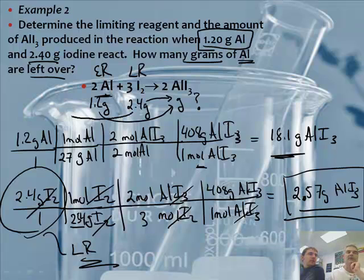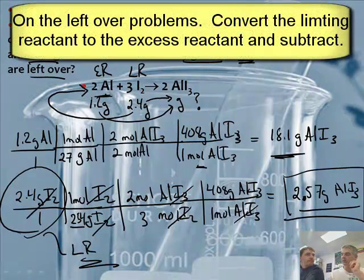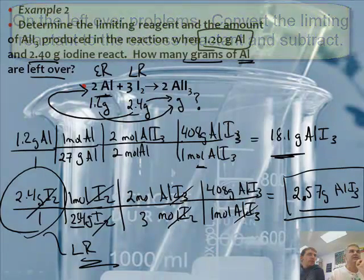But we need to figure out how much we used up and how much is then left over. So what we're going to do is we have to do, yes, one more stoichiometric thing. We're going to convert grams of iodine to grams of aluminum. And we will get a number less than 1.2. Then what we will do is we'll subtract 1.2 minus that value.